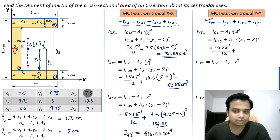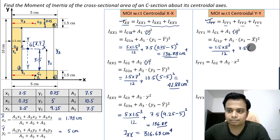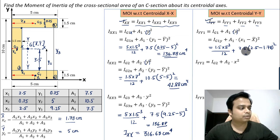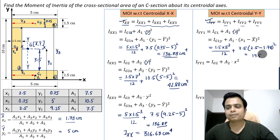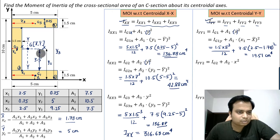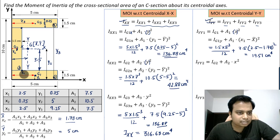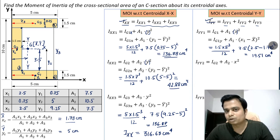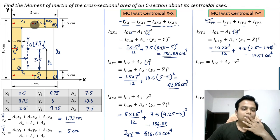For rectangle 1 about Y-Y: (1.5 × 5³)/12 + 7.5 × (x1 − x̄)². With x1 = 2.5 and x̄ = 1.78, we use (2.5 − 1.78)². The final value is Iyy1 = 19.51 cm⁴. Note: x1 minus x̄ or x̄ minus x1 gives the same result since it's squared.